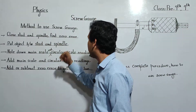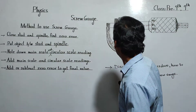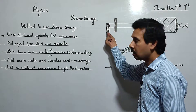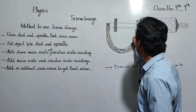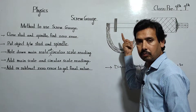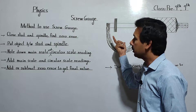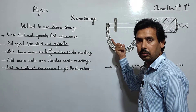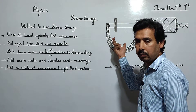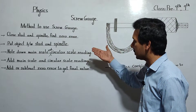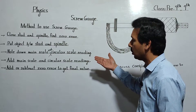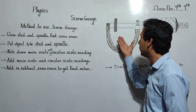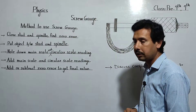First step: close the stud and spindle and find the zero error. This is the spindle and this is the stud. We close them and find the zero error — it can be positive or it can be negative. That we have discussed in the previous topic; you can watch that video again to review how to find zero error.